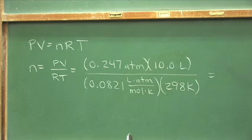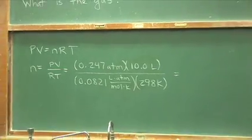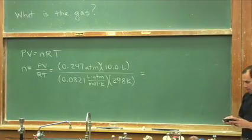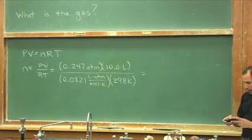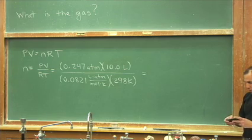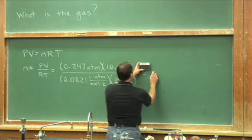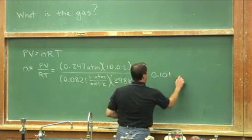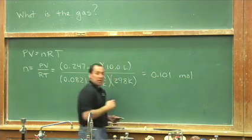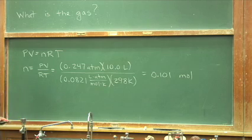So I've arranged this PV equals NRT, solving for N by dividing both sides by RT. And I've plugged in some numbers here. This turns out to be 0.247 atmospheres times 10 liters divided by our constant times 298. Let me write this down to three significant figures.